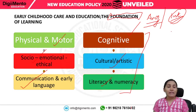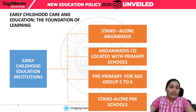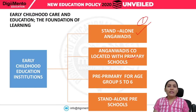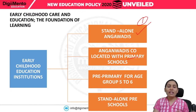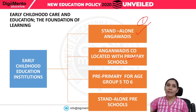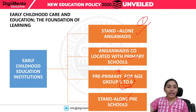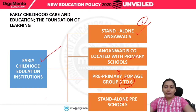The four categories of Early Childhood Education institutions are: first, standalone Anganwadis (independent Anganwadis not attached to any primary school); second, Anganwadis co-located with primary schools (within the premises of primary schools); third, pre-primary sections for the age group of five to six years; and fourth, standalone pre-schools.